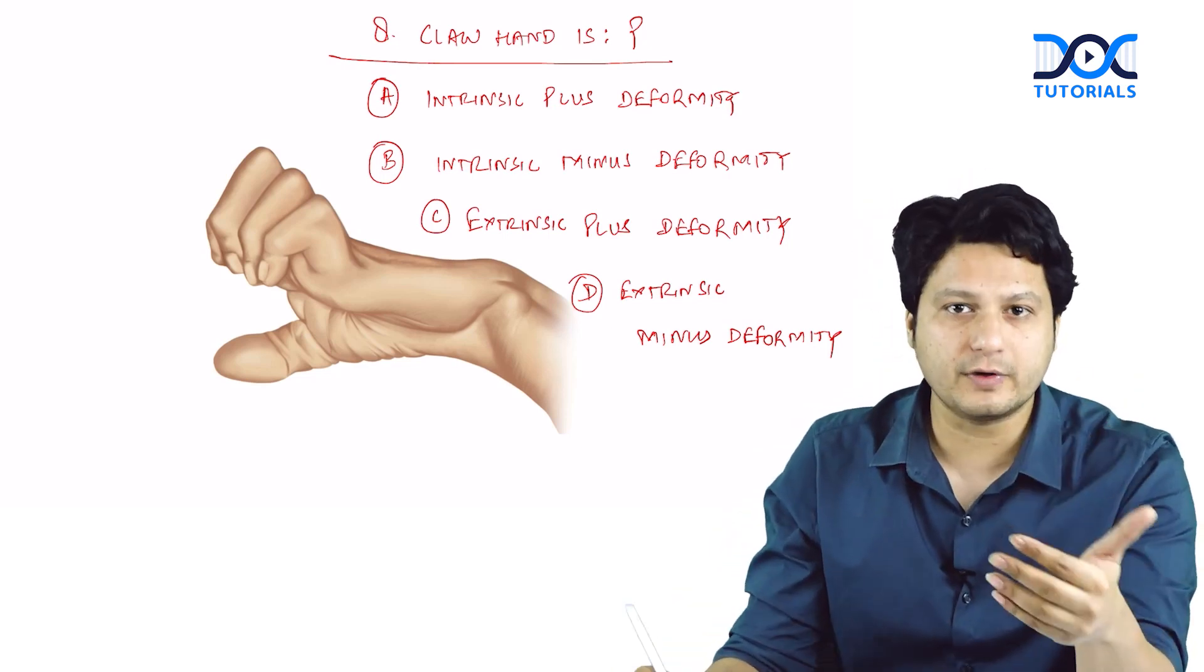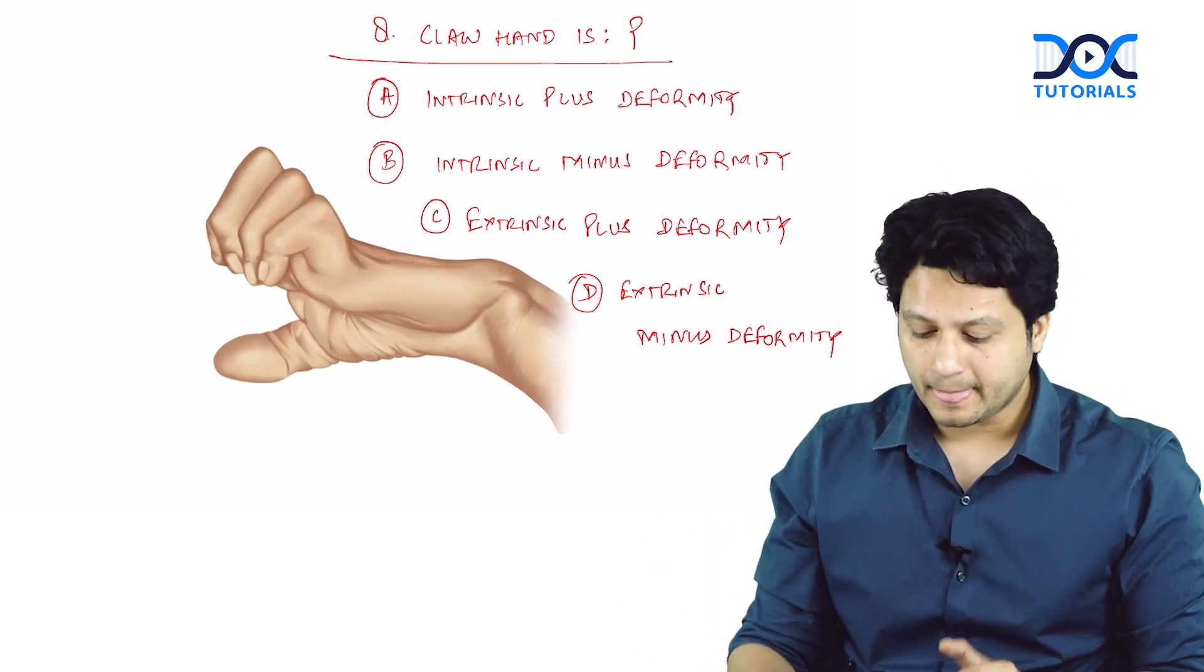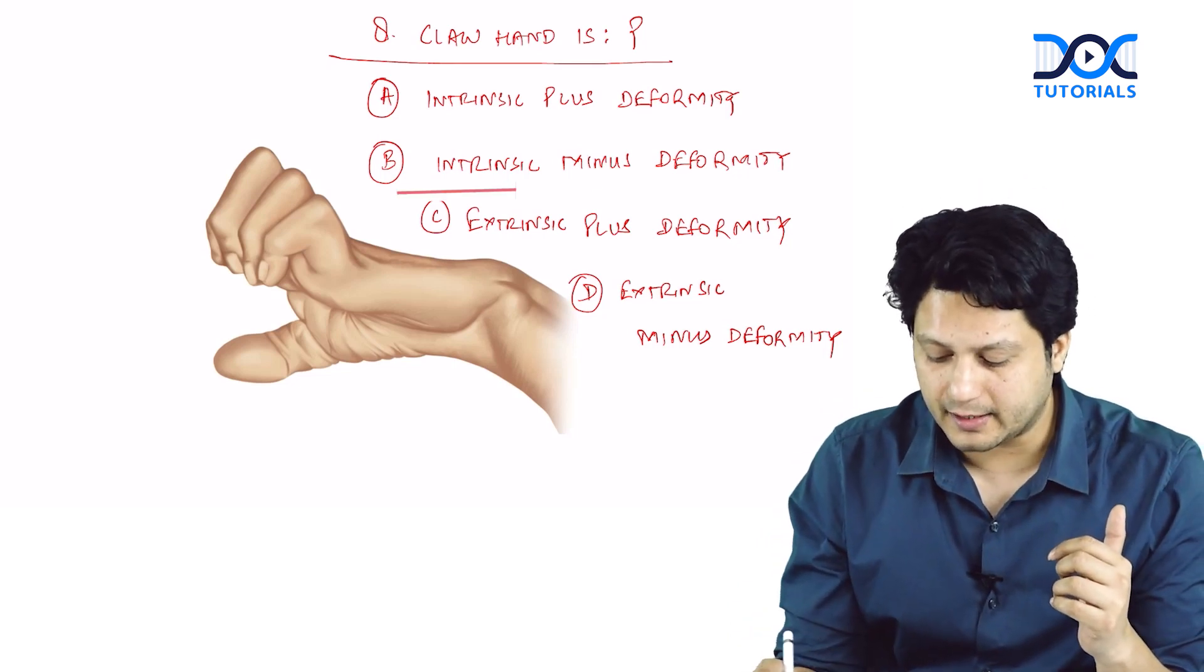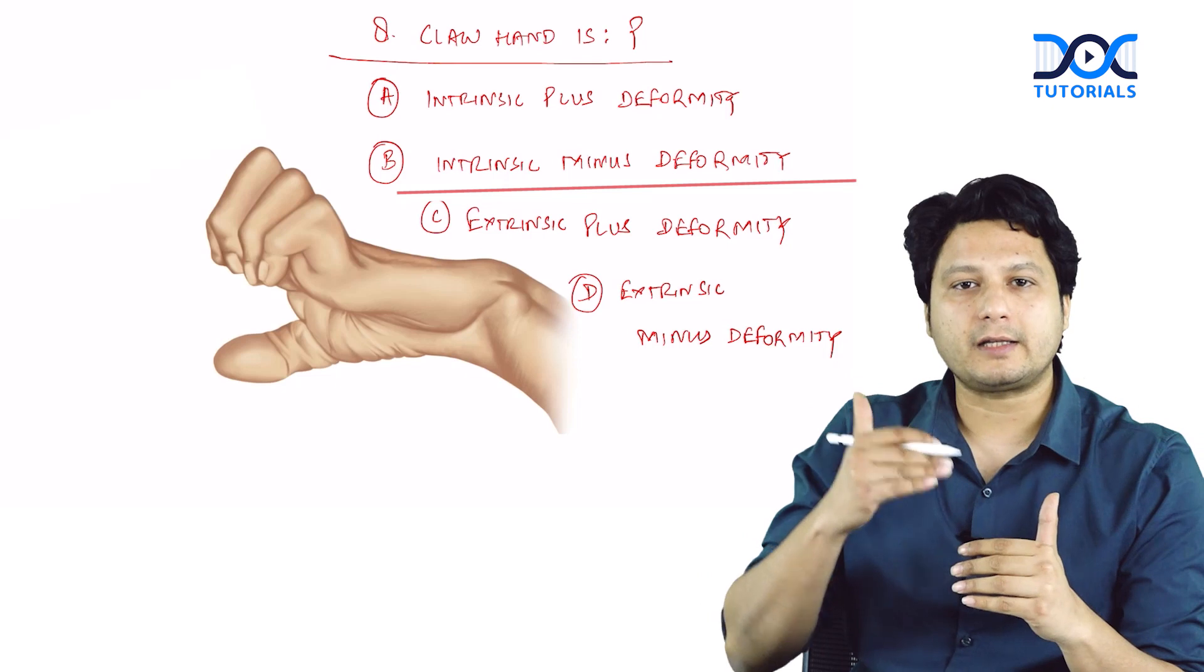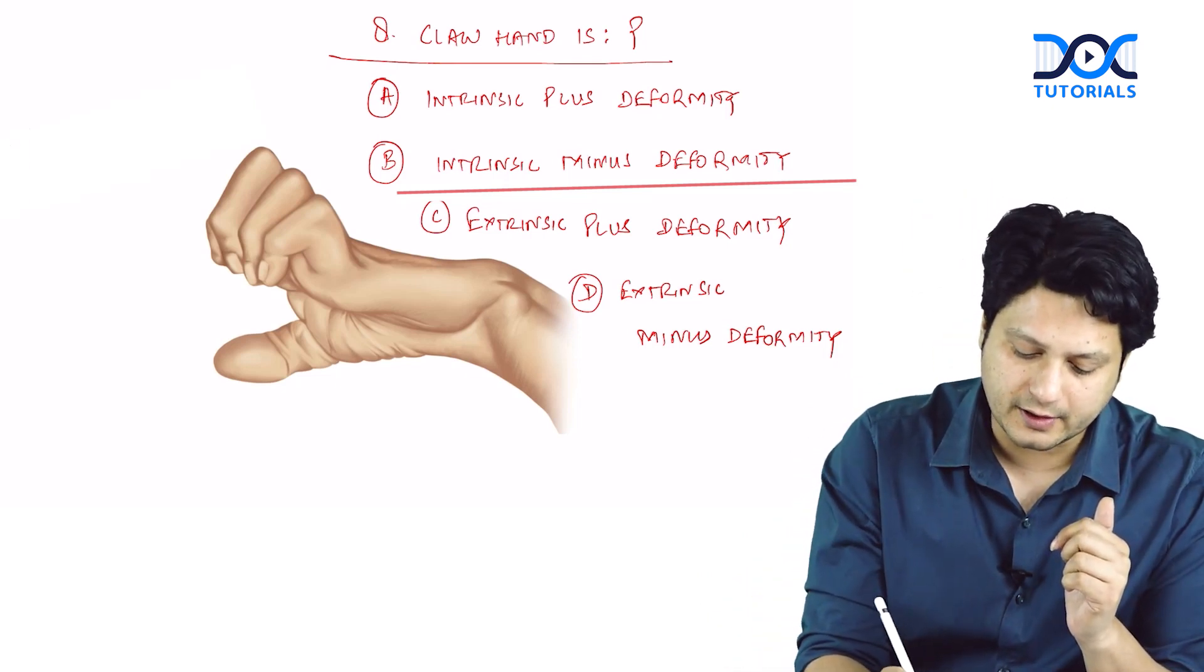This is obvious and you're all aware of this. But what is the different name given to claw hand deformity? The other name is intrinsic minus deformity. Why is it called intrinsic minus deformity? Because the lumbrical is one set of intrinsic muscles.